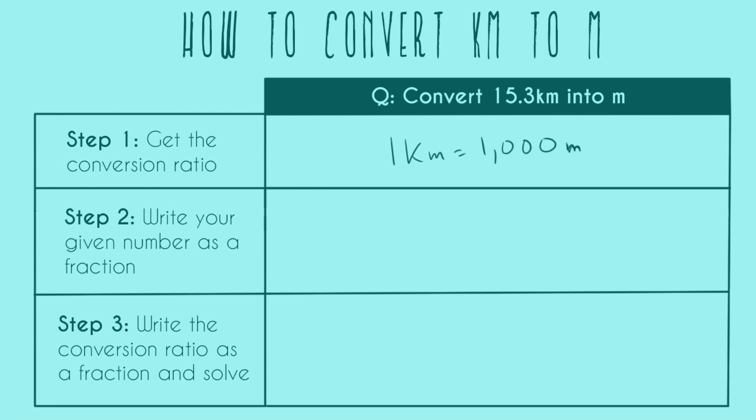So step two is to write your given number as a fraction. That's just the number that you were given in the problem. In this case, it's 15.3 kilometers. And remember that any number can be written as a fraction if you just have a denominator of one. Also for these problems, we really need to care about units. So kilometer has to go in the fraction as well. Unless your unit is explicitly drawn in the denominator, it means it's going to be in the numerator just like the number. So we go ahead and write our fraction like this.